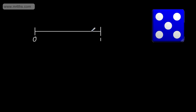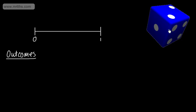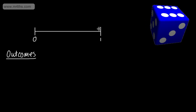All of the probabilities will lie somewhere between zero and one. If we sum all probabilities, they must be equal to one. Let's look at some of the vocabulary that we use. The first word is outcome, or outcomes. If I took this fair six-sided dice and rolled it, the outcomes are the numbers one to six.